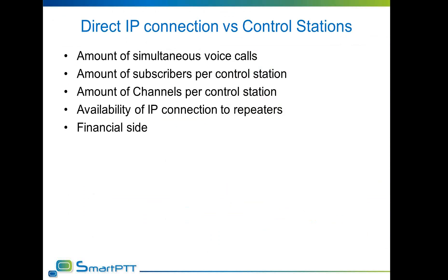There is no straightforward method to decide which control system fits best for dispatching a specific radio network. Various factors can affect this decision and different combinations can give different end results. The final decision can commonly only be taken after testing the system in a laboratory. Control stations are commonly used for small systems with fewer than 50 subscribers and a low number of voice channels. For bigger systems, a direct NAI connection is the preferred option, as it allows use of the MotoTURBO system to its full power.